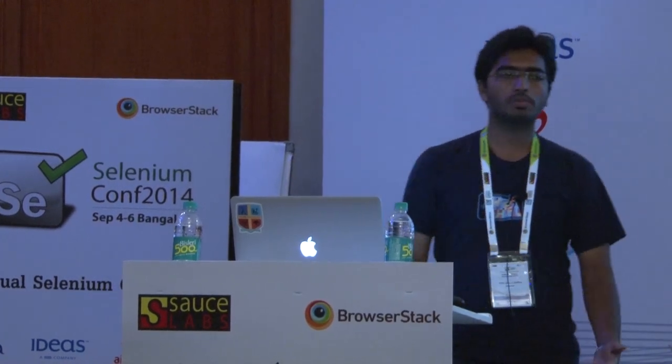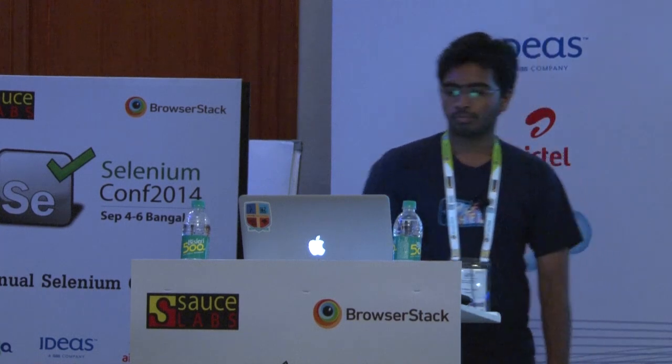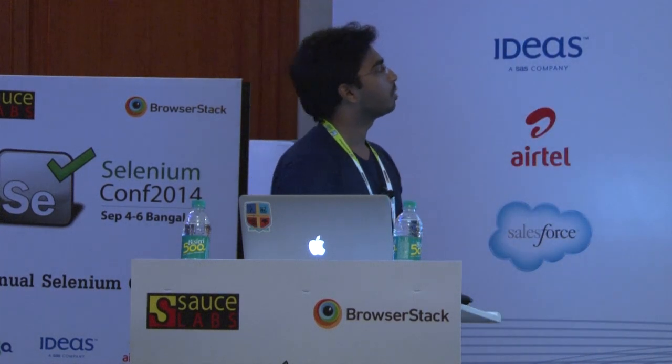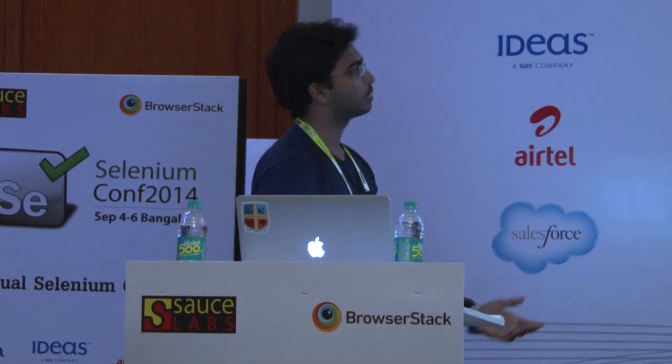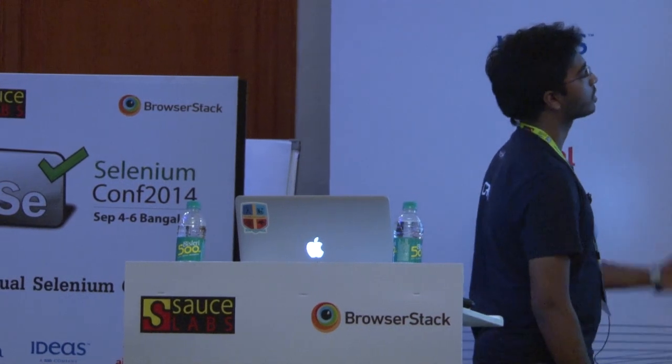Clojure is designed to be a hosted language. It gives clean, simple, direct access to Java APIs — you can call any Java API directly. Clojure is a great Java library consumer with dot notation. The syntax is: dot, then class name or instance, then member of that class, and its arguments.